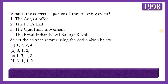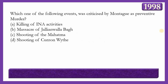Next question: What is the correct sequence of the following events: the August Offer, the INA Trial, the Quit India Movement, and the Royal Indian Naval Ratings Revolt? The answer is option A — 1, 3, 2, 4 — meaning the August Offer (1940), Quit India Movement (1942), INA Trial (1945), and Royal Indian Naval Revolt (1946).